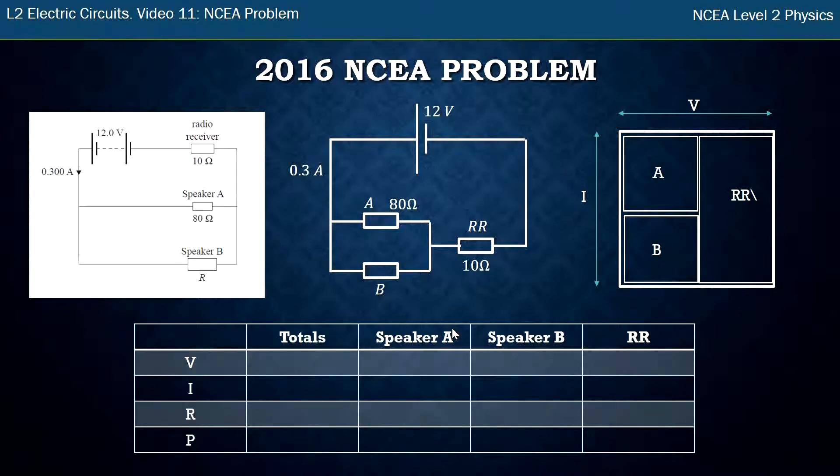Alright so I then draw my box and start filling in all the information I have. So I've already got the 12 volts total, the 0.3 amps total as well. They've given me speaker A's resistance and the radio receiver's resistance. So I'm going to put any information now onto the IV diagram so I know the total that's the width.